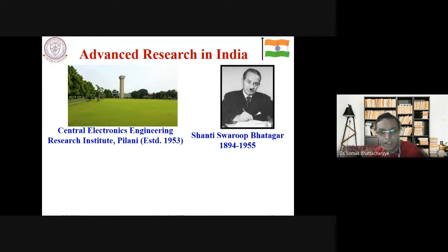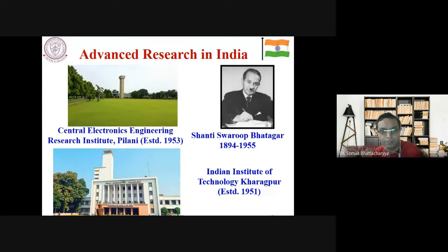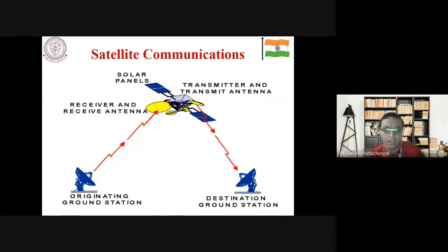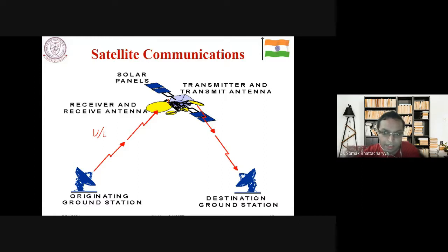Radar frequency bands originated during World War II, when soldiers used a code language to communicate without the enemy detecting it. The bands are: L (1–2 GHz), S (2–4 GHz), C (4–8 GHz), X (8–12 GHz), Ku (12–18 GHz), K (18–26.5 GHz), and Ka (26.5–40 GHz). This was later adopted by IEEE. People also consider the microwave frequency range as 1 to 40 GHz, with the millimeter wave beginning around 40 GHz.